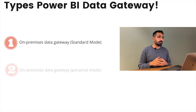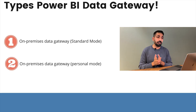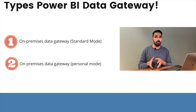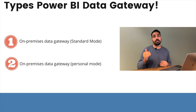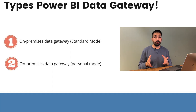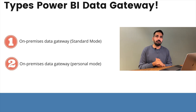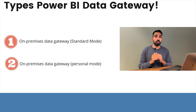Now let's discuss the types of Microsoft Power BI Data Gateway. There are two types: on-premise Power BI Data Gateway Standard Mode and Personal Mode. Standard Mode is also known as Enterprise Mode — in this mode you can add as many users as you want. In Personal Mode, only one person can operate it; you cannot add more than one user. Whenever you are working in an organization, always use Standard Mode — never Personal Mode — so your colleagues and managers can also work with it.